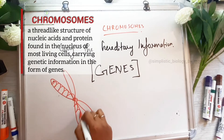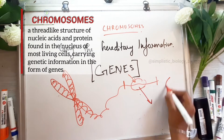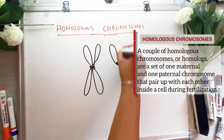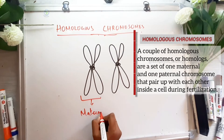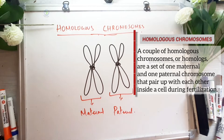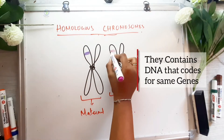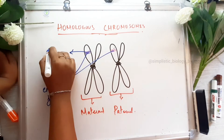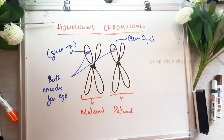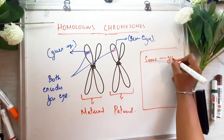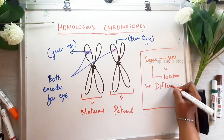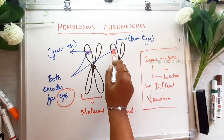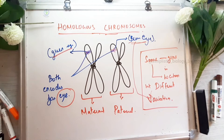Chromosomes carry hereditary information — that is, genes. In the thread-like structure, one part is a gene. Homologous chromosomes are a set of chromosomes, one maternal and one paternal, formed through fertilization. They contain DNA that codes for the same genes — for example, the gene for eye color — but with different variations, such as green and brown eyes.